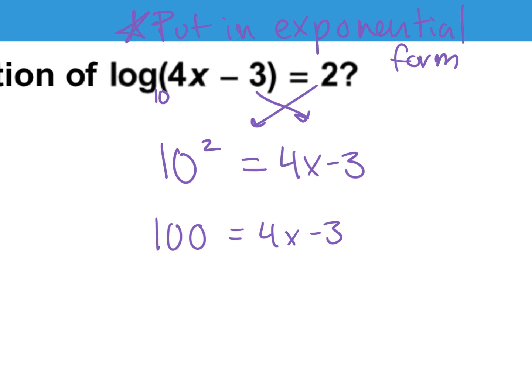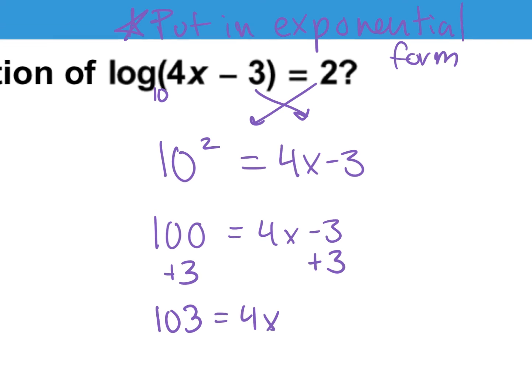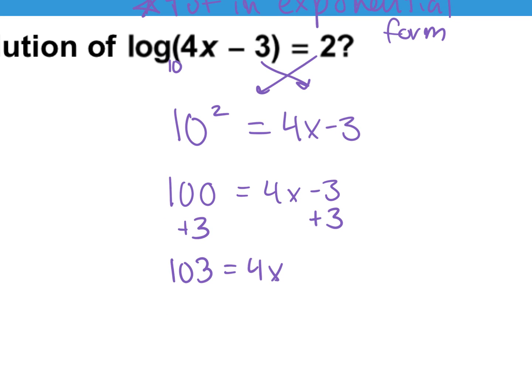So 100 is equal to 4x minus 3. From here we solve for x. Add 3 first — 103 equals 4x. Then divide by 4. x equals 103 divided by 4, which is 25.75.